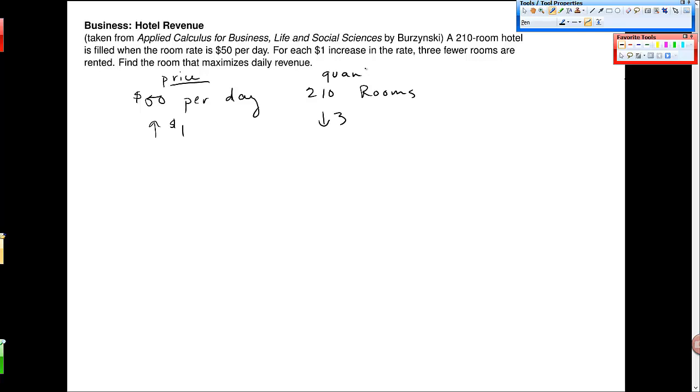So we have kind of these two entities or variables in the problem. One is that price changes. When price changes, the quantity changes, right? Okay, so find the room rate, I think it's supposed to say, that maximizes daily revenue.